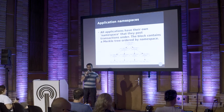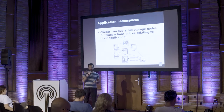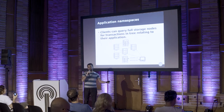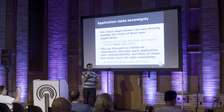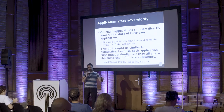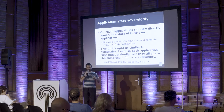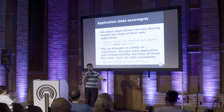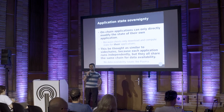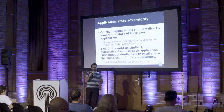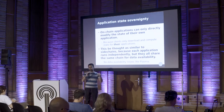Applications can also have their own namespaces. If you put them in a Merkle tree ordered by namespaces, you can basically allow clients to query nodes that have the whole blockchain for transactions relating to their specific application. The key principle behind this model is something called application state sovereignty. If all this is to work, applications can't directly modify the state of other applications. Because if one application modifies the state of another, then the users of that other application have to also verify the state of the first application, which violates the principle that users should only need to download transactions of applications they are using. Basically, applications are sovereign in the sense that only they can control their own state.